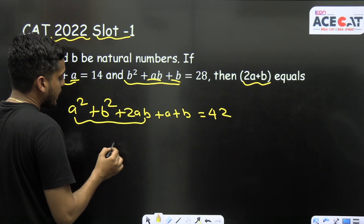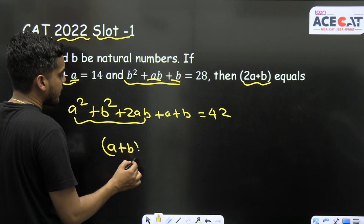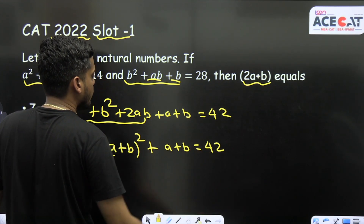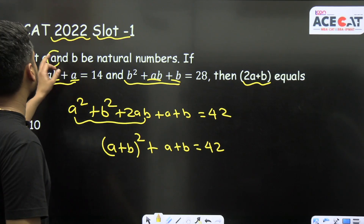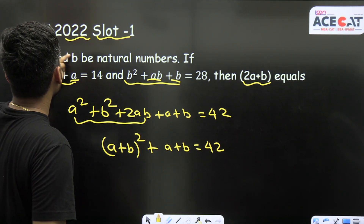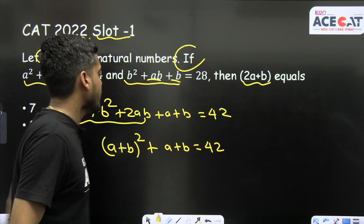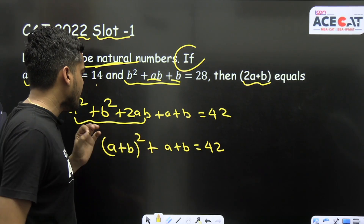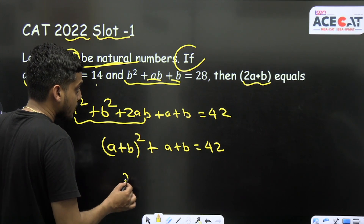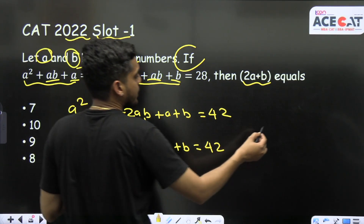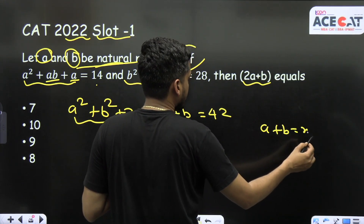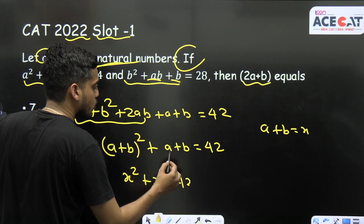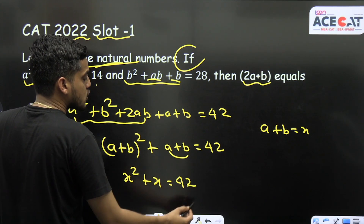This form has become (a+b)² — we all know this fundamental formula. So (a+b)² + (a+b) = 42. Since a and b are natural numbers, let's assume a + b as x. So it becomes x² + x = 42.